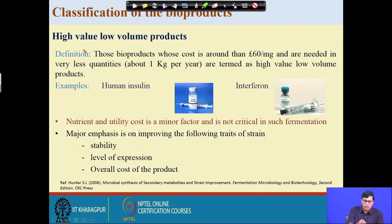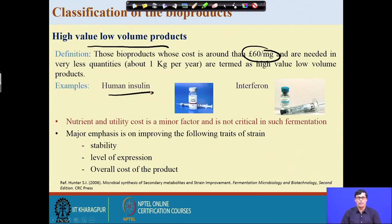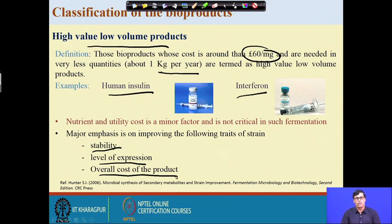High value low volume products have a cost of more than 60 pounds per milligram of product. Examples include human insulin — as more and more people suffer from diabetes, insulin produced using recombinant DNA technology is very costly, with production of about 1 kg per year — and interferon. The major emphasis for improving these products is on strain stability, level of expression, and overall production cost, since these are recombinant proteins.